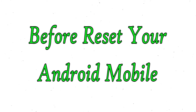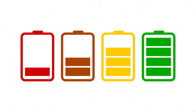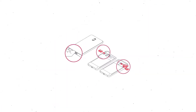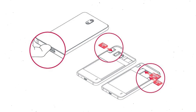Before resetting your mobile, make sure the battery is properly charged — if less than 50%, charge your mobile first. You need to make sure that the data on your device is backed up so you do not lose valuable photos or documents. Reset deletes all your mobile data, so back up all important data and remove your SIM and SD card.